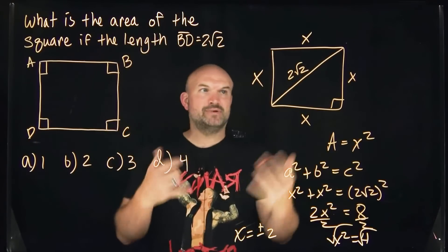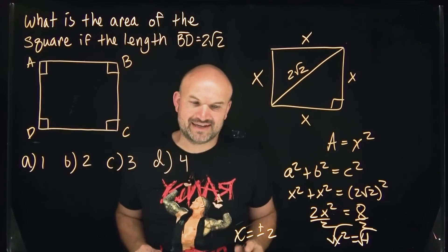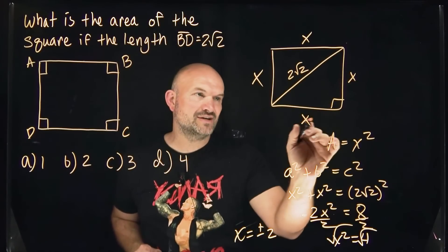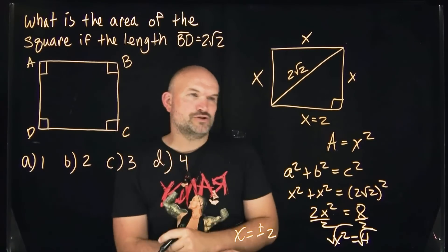However, ladies and gentlemen, we're dealing with the dimensions of a square. So a negative 2 does not really make any sense. So we're going to focus here on x is equaling 2, not the negative version, because that doesn't make sense in this drawing.